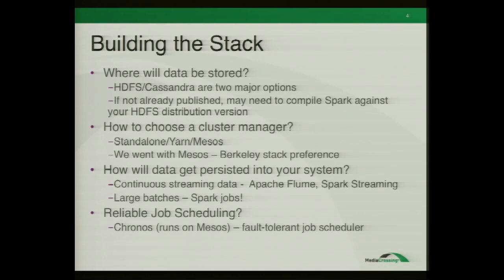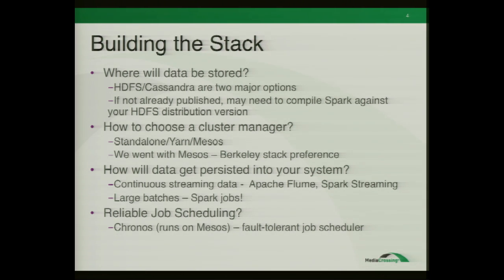We have two types of data to deal with at Media Crossing. You have your streaming data — for that we ended up using Apache Flume with Apache Storm feeding the data. That's what we're doing on the streaming side. For our large batches, we drop the data into a file system and just use Spark jobs to load it in and format it the way we want it.